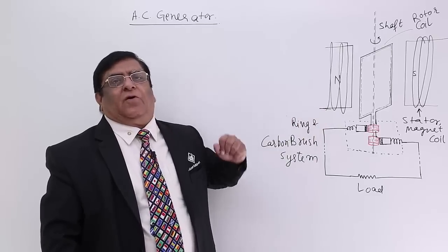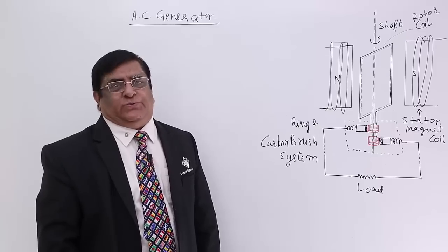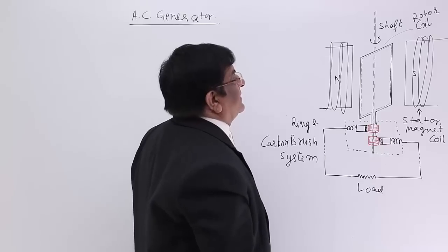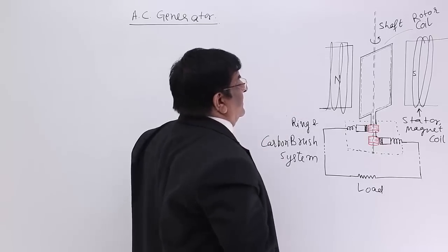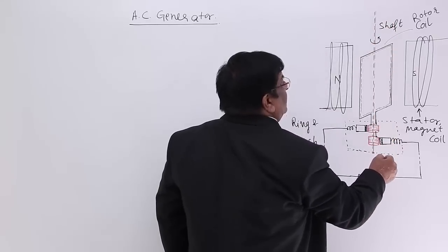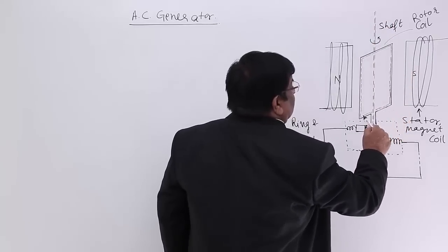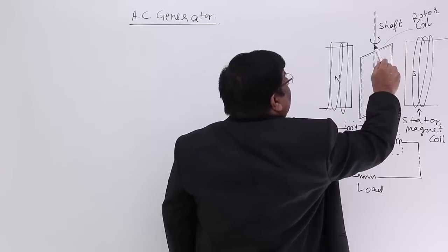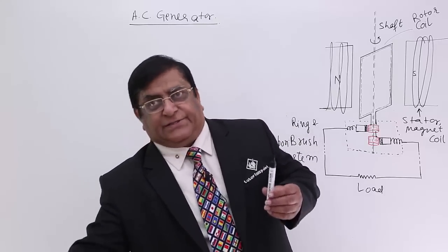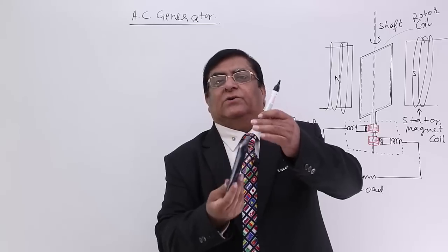This device is called an AC generator and it powers all the powerhouses all over India. It has a rigid frame with a shaft. Perpendicular to that shaft there is a coil, which we call the rotor coil because this coil is going to rotate. So this is called the rotor coil.